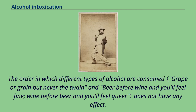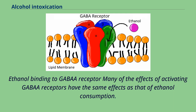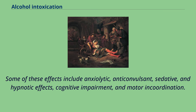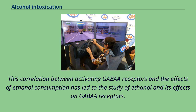The order in which different types of alcohol are consumed does not have any effect. Many of the effects of activating GABA receptors have the same effects as that of ethanol consumption. Some of these effects include anxiolytic, anticonvulsant, sedative, and hypnotic effects, cognitive impairment, and motor coordination impairment. This correlation between activating GABA receptors and the effects of ethanol consumption has led to the study of ethanol and its effects on GABA receptors.